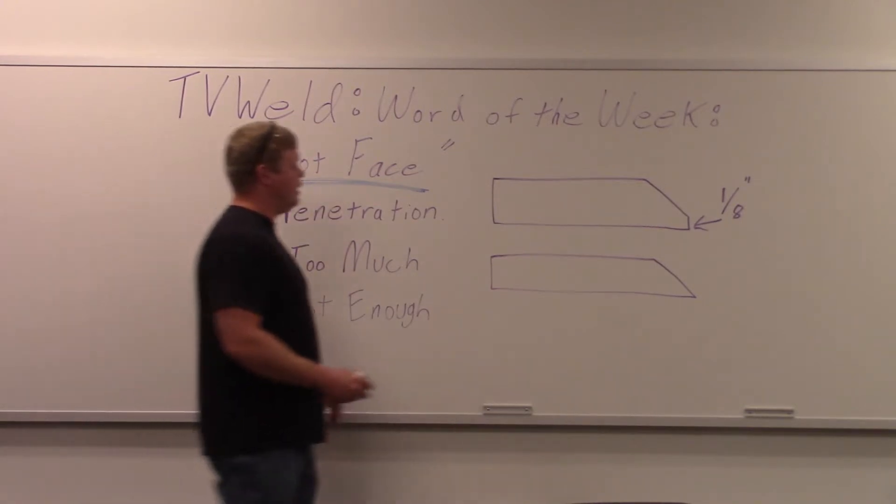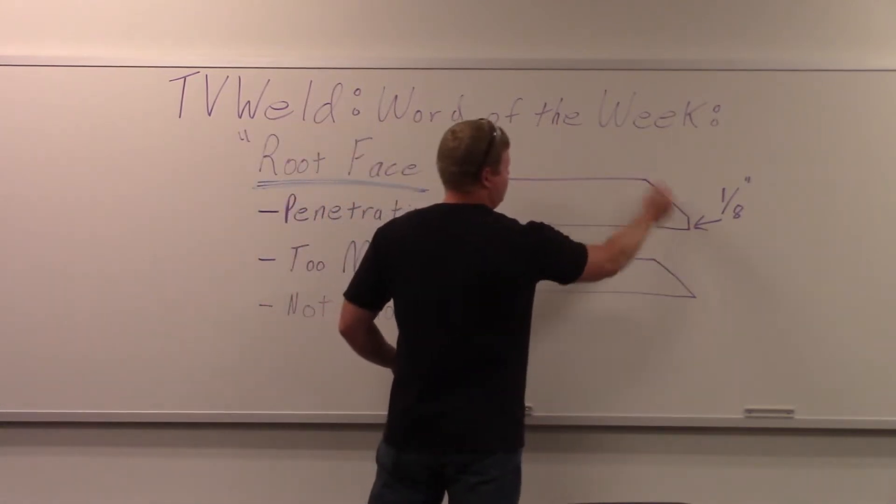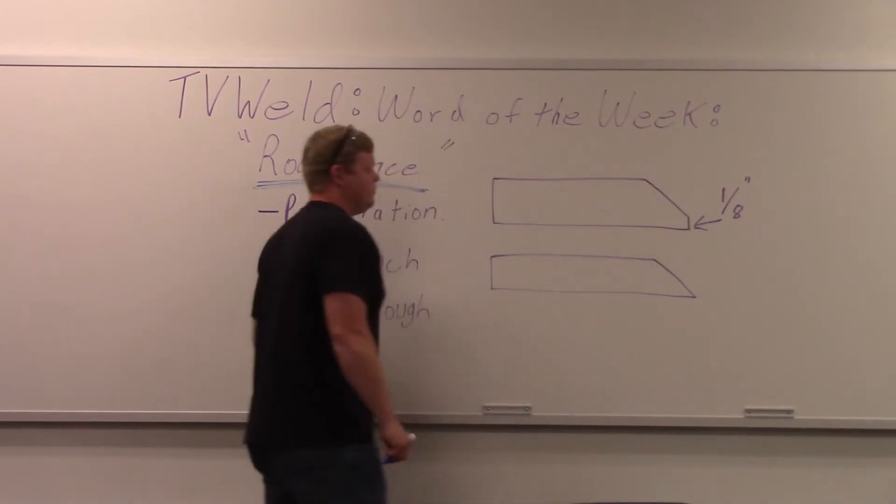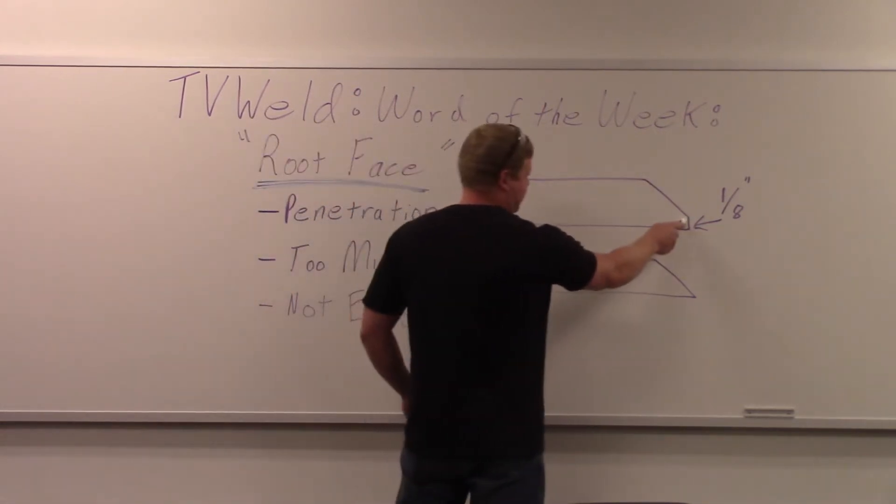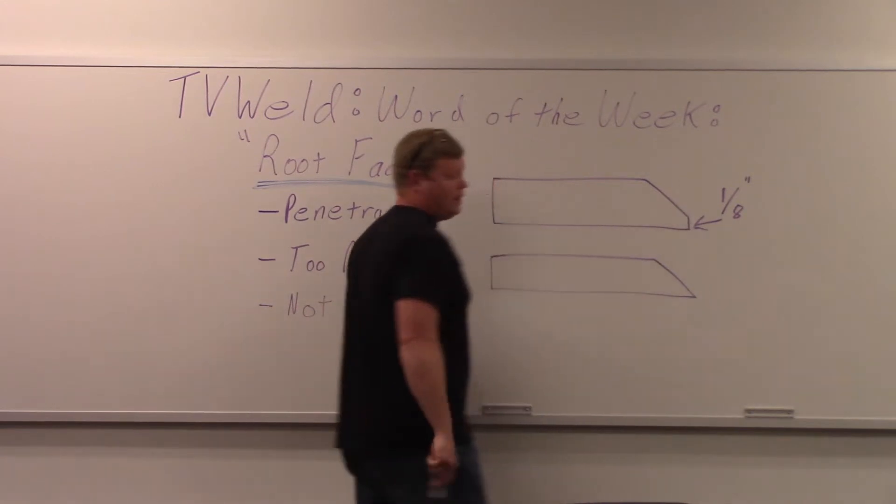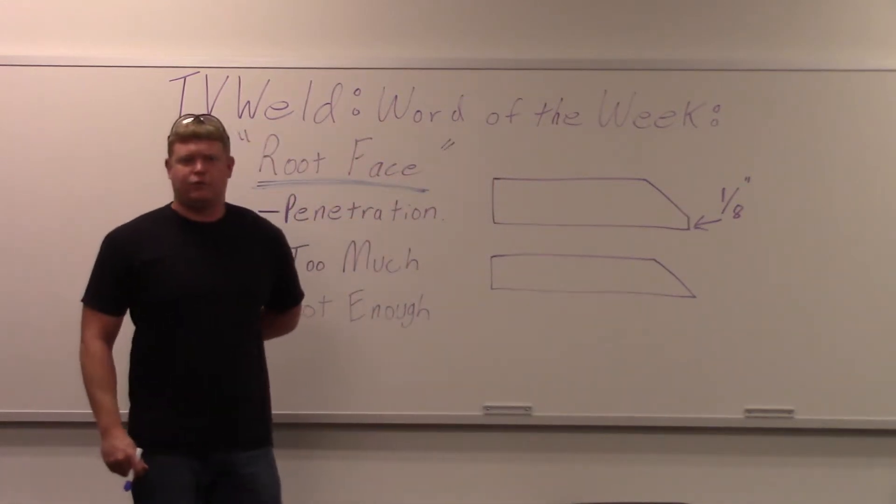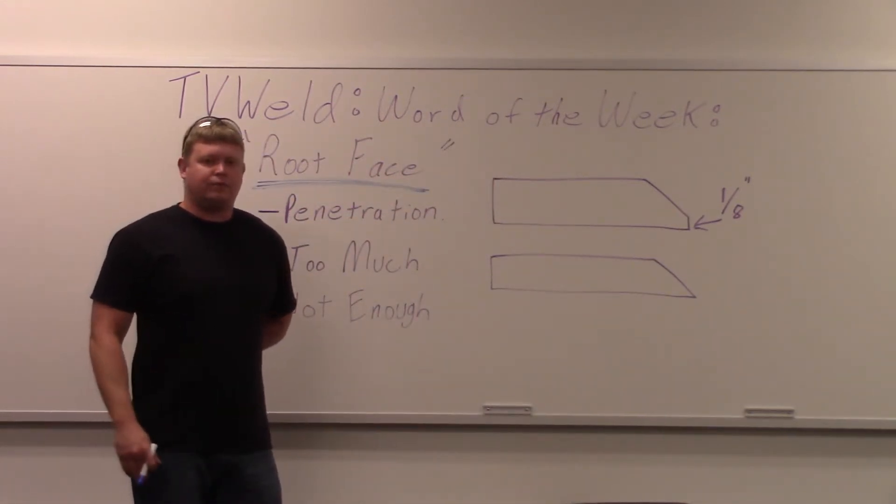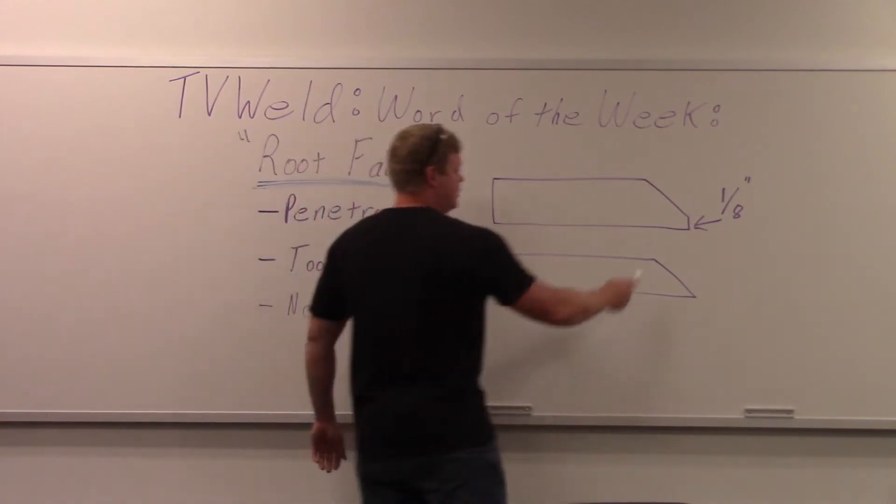All it is, to go over here, this is a bevel that we did for a groove joint. So it's just a flat spot right here that they're usually put on with a grinder. Somebody put it on the mill if you're doing something with really tight parameters. But it's just a flat spot.